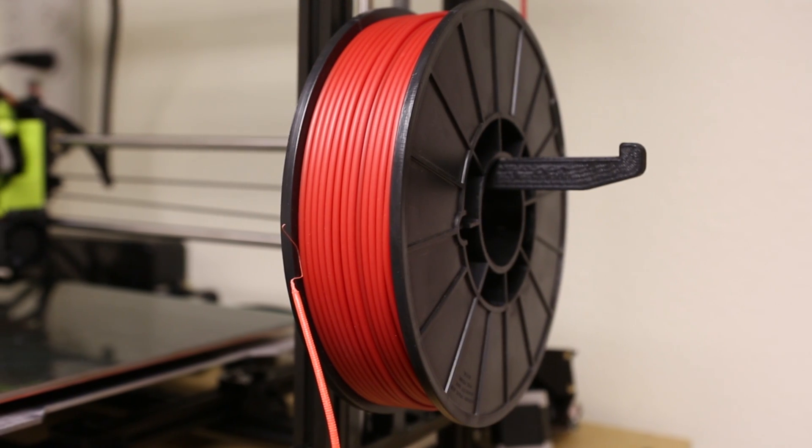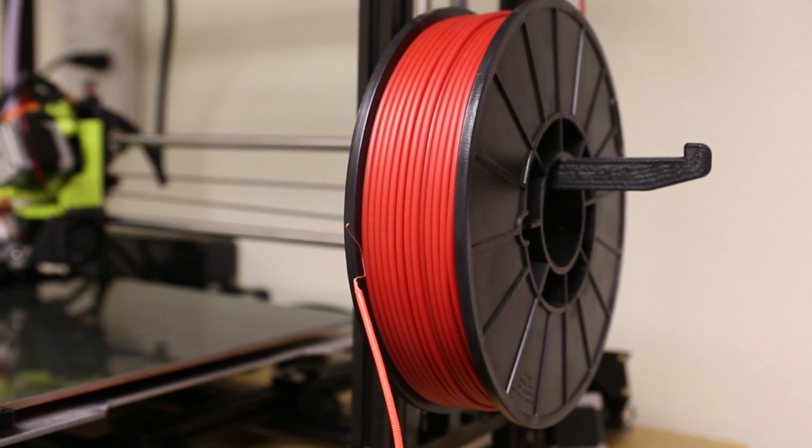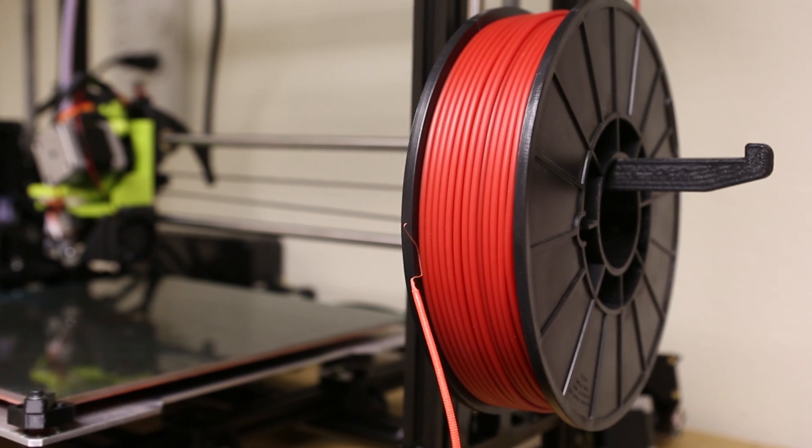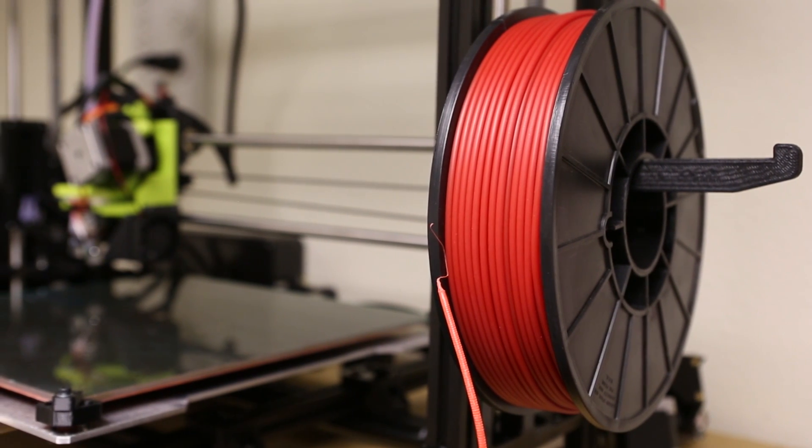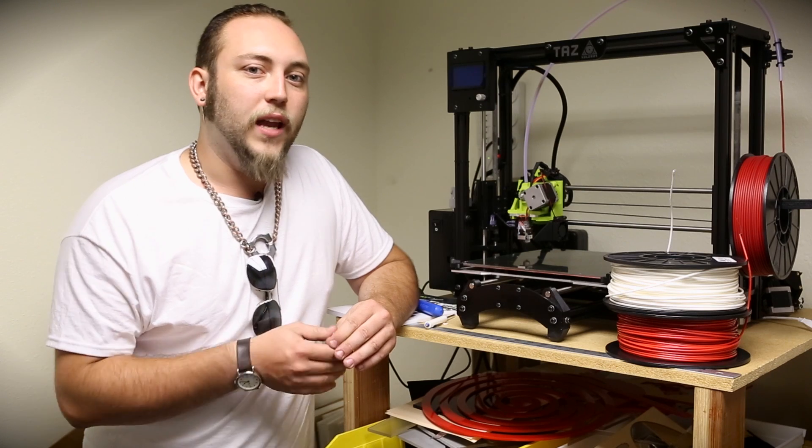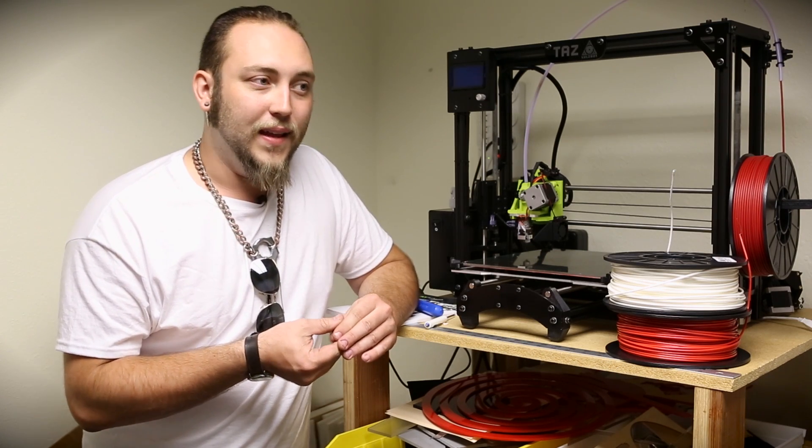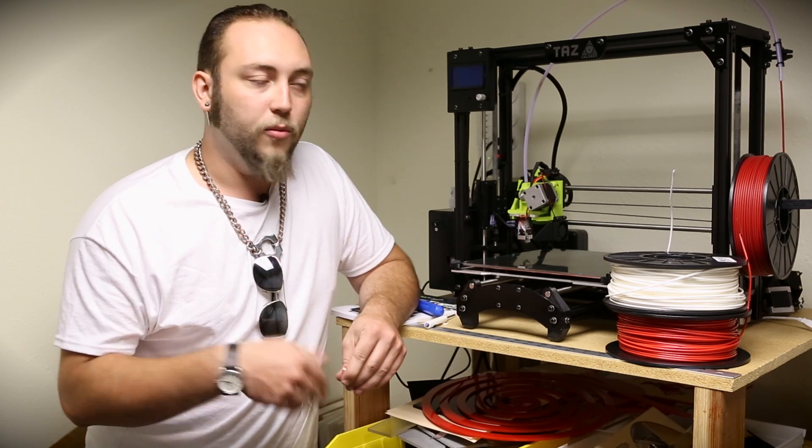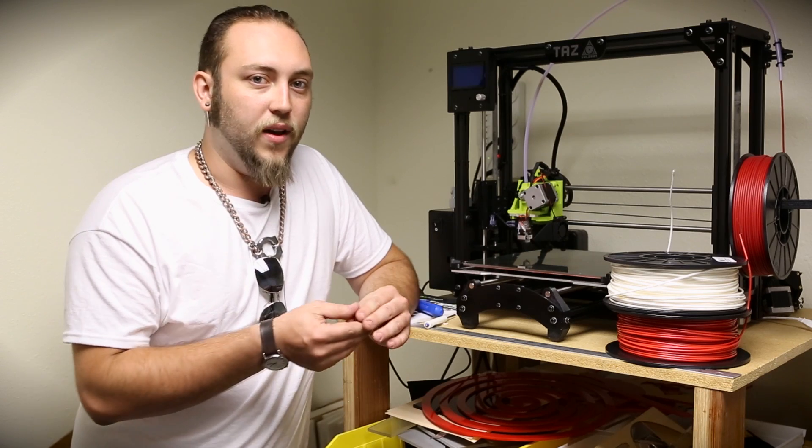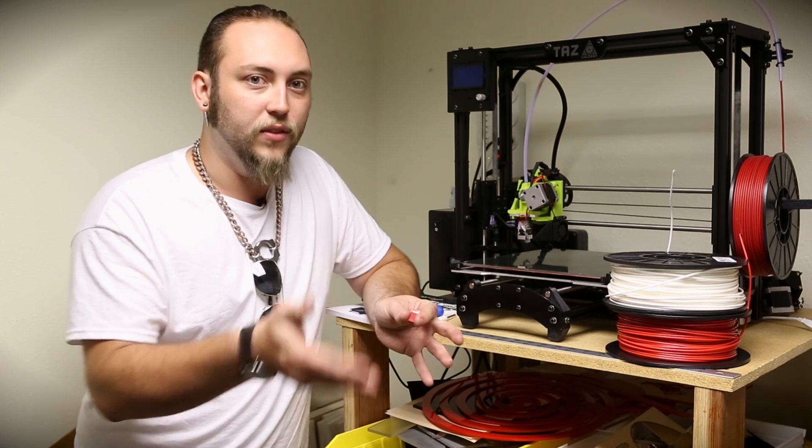The third type of filament that we carry is a really cool material called NinjaFlex. I'm not sure exactly what NinjaFlex is made out of, it's probably a trade secret. But they call it a thermoplastic elastomer, and that is what it is. It's a thermoplastic. You can extrude it with a hot nozzle the same way you do any of these filaments.